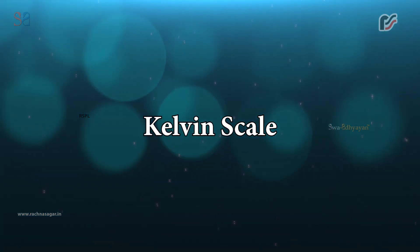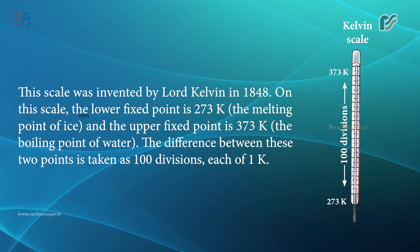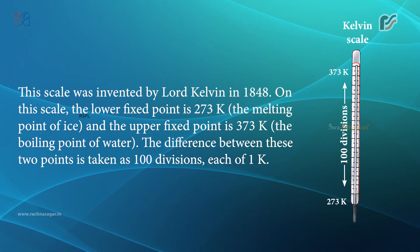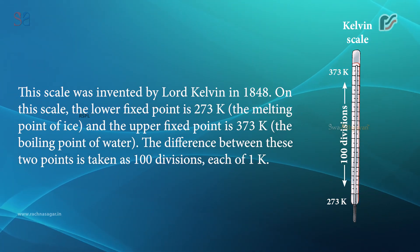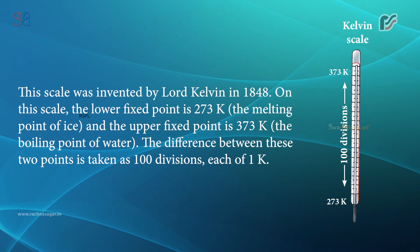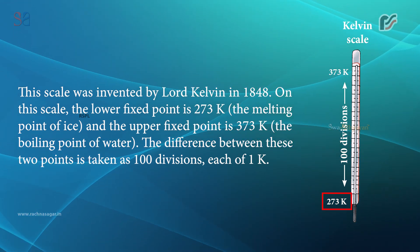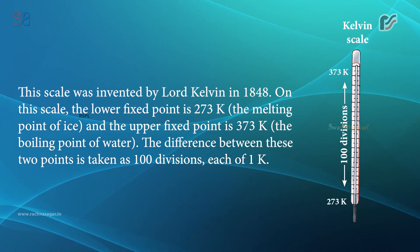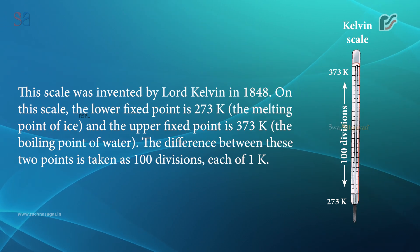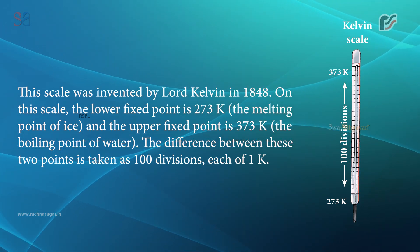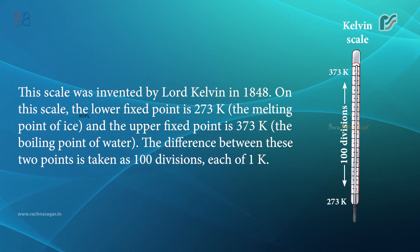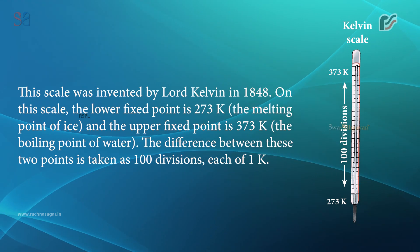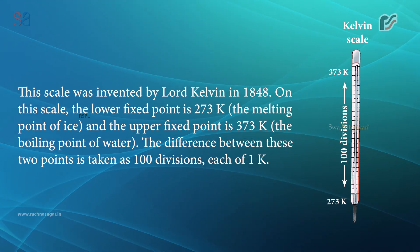The Kelvin scale was invented by Lord Kelvin in 1848. On this scale, the lower fixed point is 273 Kelvin, the melting point of ice, and the upper fixed point is 373 Kelvin, the boiling point of water. The difference between these two points is taken as 100 divisions, each of 1 Kelvin.